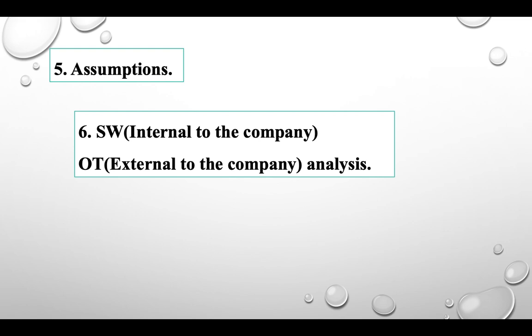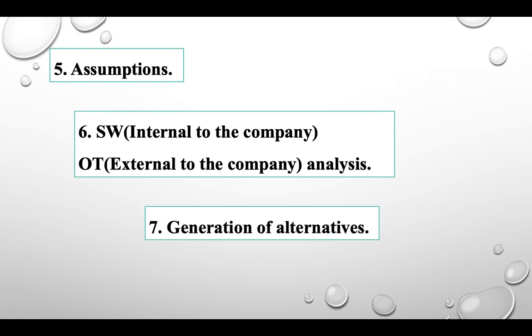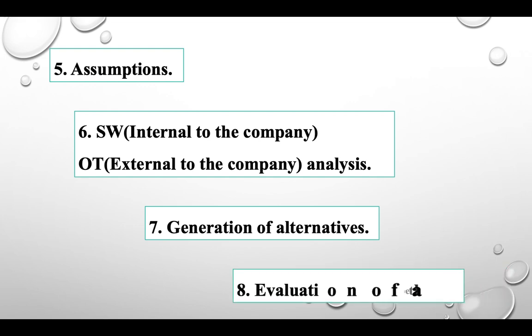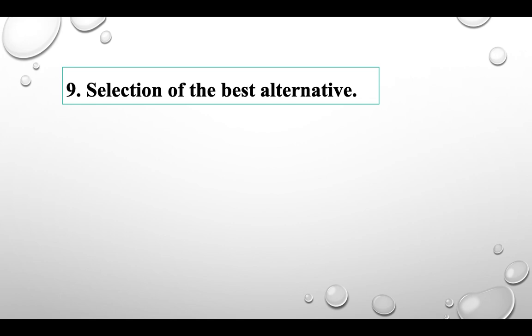After SWOT analysis, we move to generation of alternatives. Every problem has a solution, and there is no single fixed solution. We can generate multiple alternatives to address the problem. Once we have several alternatives, we evaluate all of them, because we cannot implement all of them simultaneously. We have to evaluate and then select the best one.